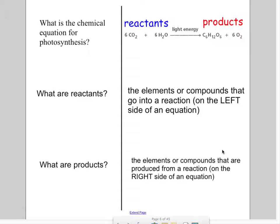The chemical equation for photosynthesis is that in order to have photosynthesis you need to have six carbon dioxides, six waters, and you also need light energy from the sun. These are called reactants.